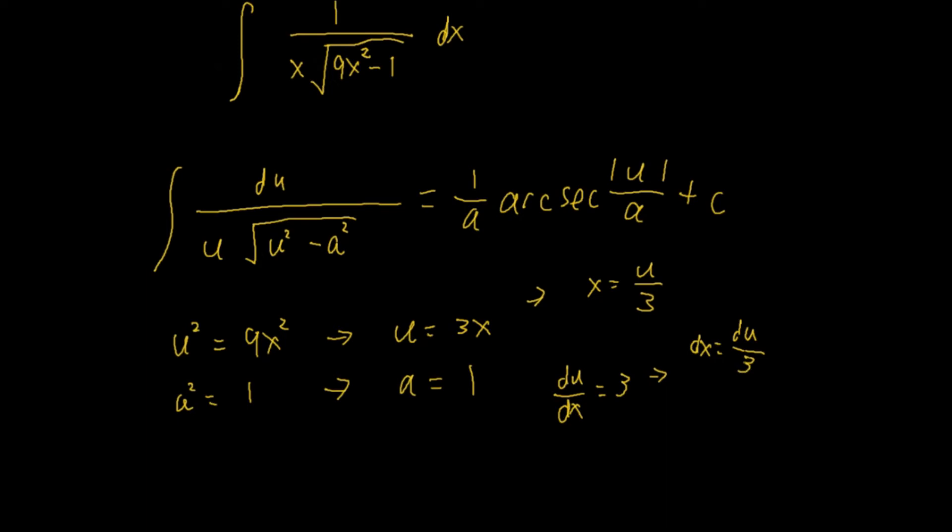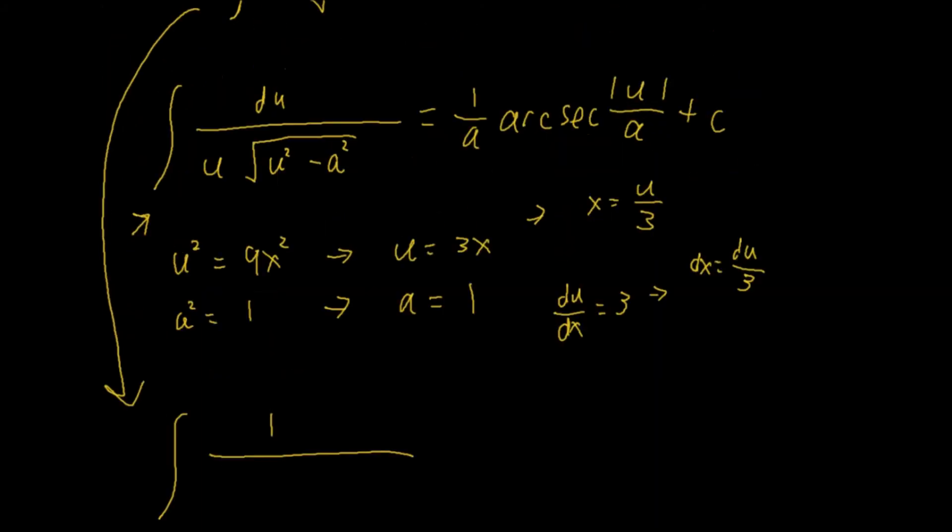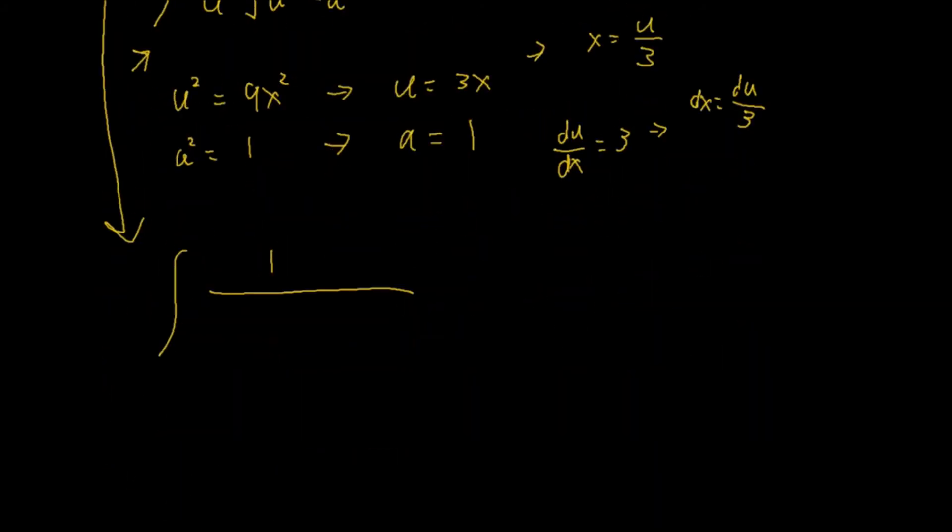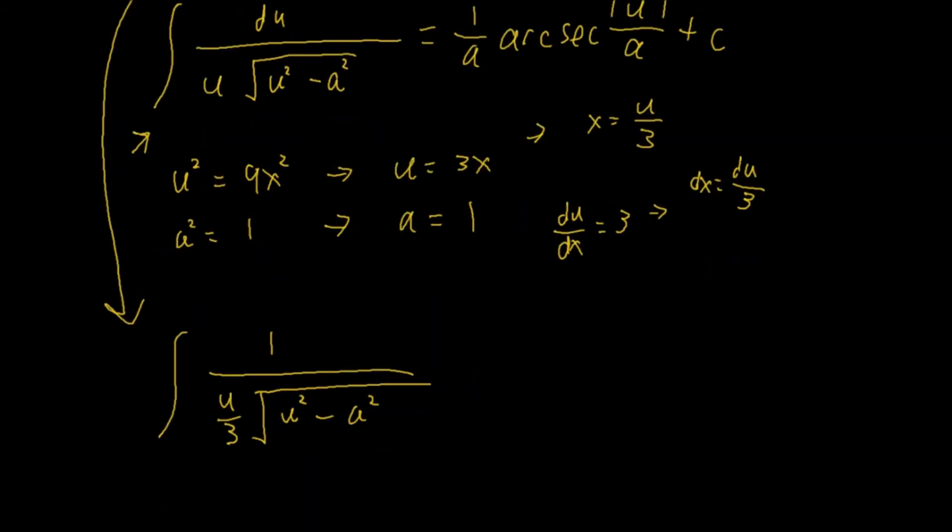Now, I think we have enough. We can substitute into this formula. And, we have to rewrite this equation, this integral. So, this is equal to integral 1 over, x is u over 3, so we have to substitute that in, u over 3. Now, square root of, 9x squared is u squared, so this is u squared, minus 1 is a squared, so a squared. Now, dx equal to du over 3 here. So, this is times du over 3.